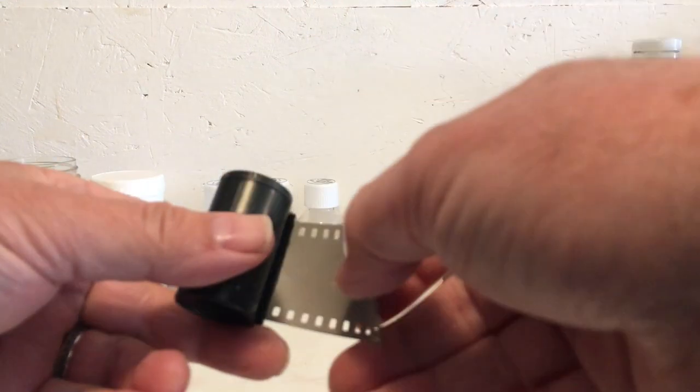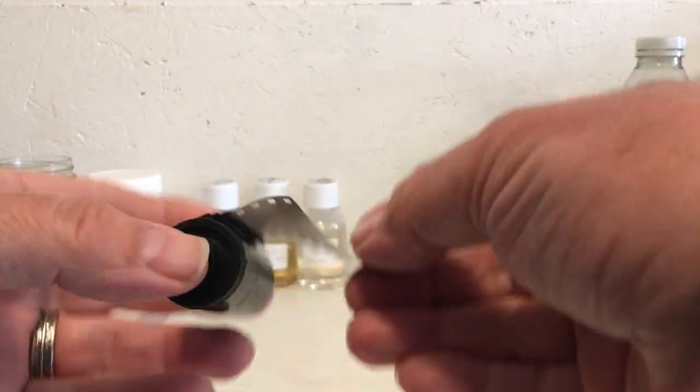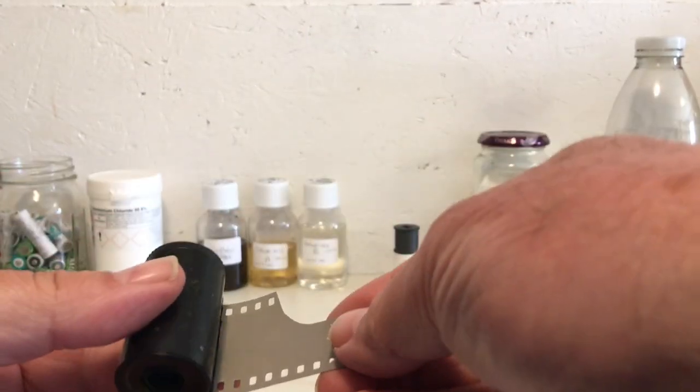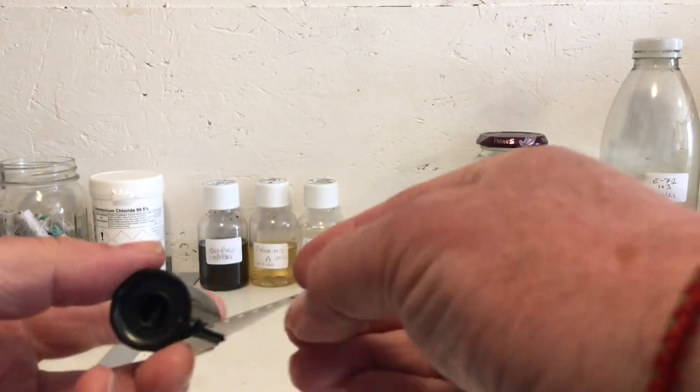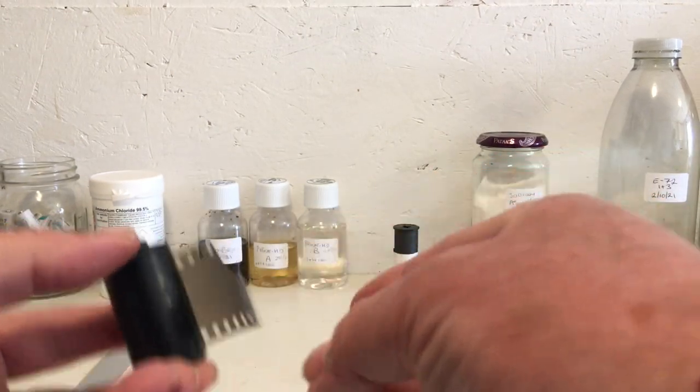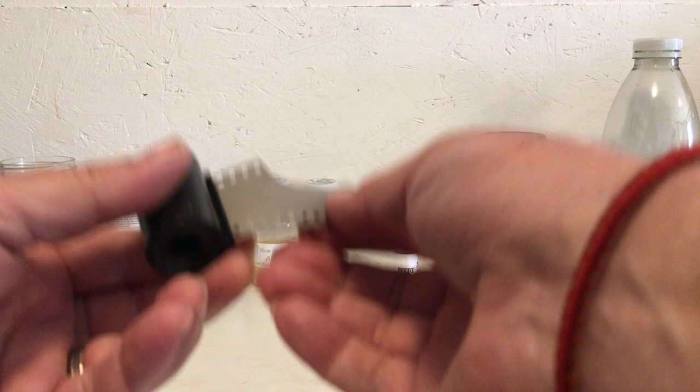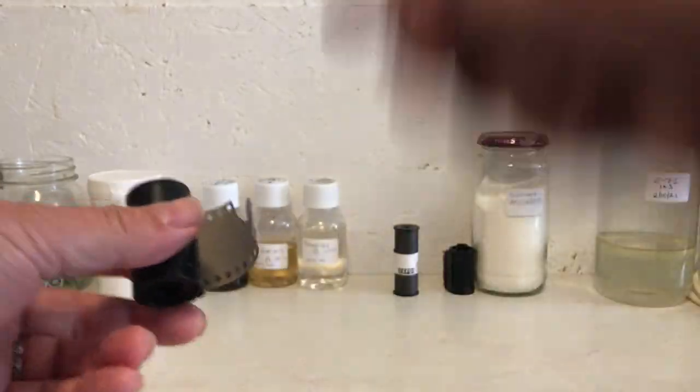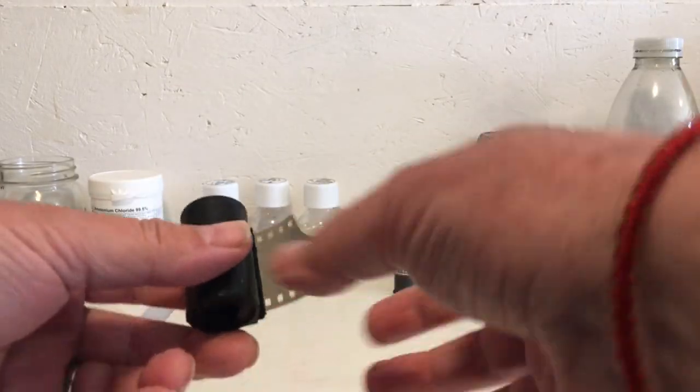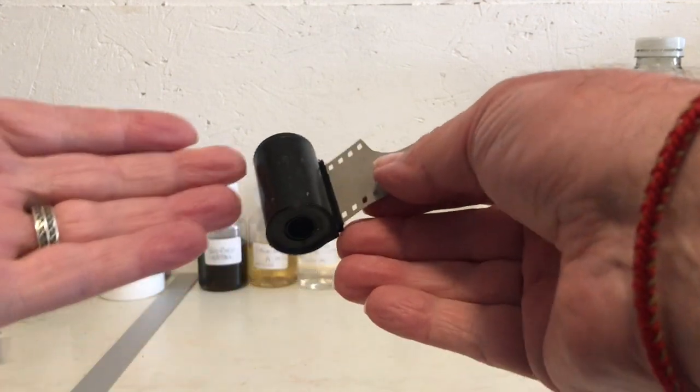So today's tip of the day is how do I develop a film when I don't know what it is. This is a great example. I have a bulk loaded film here that I finished and I forgot to write on it what it is. Now I think I know it's FP4, but it might not be.